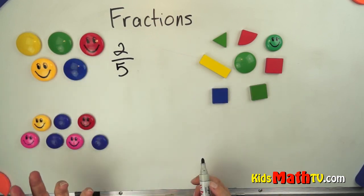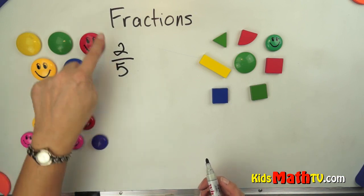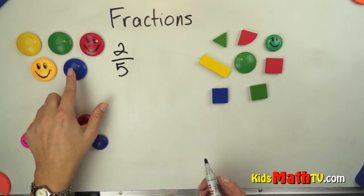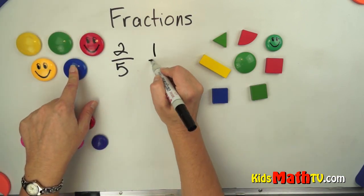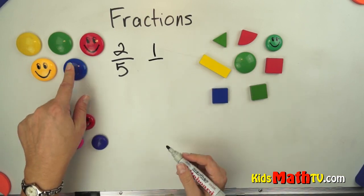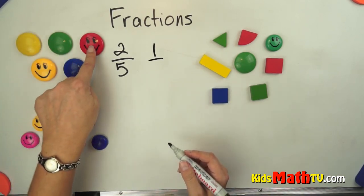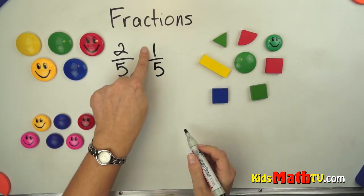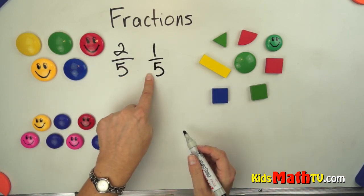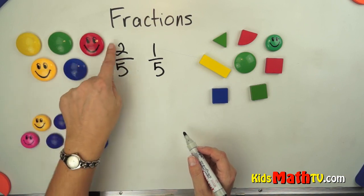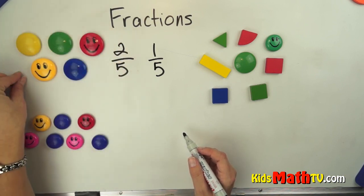If I wanted to do blue, the whole is still five. How many are blue? Well, there is one blue, and there are five total. So my fraction is one blue out of five total. Two smiley faces out of five total.